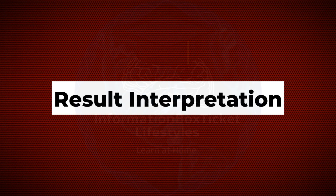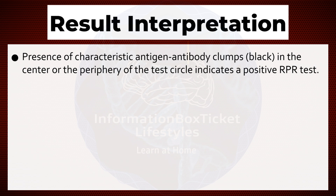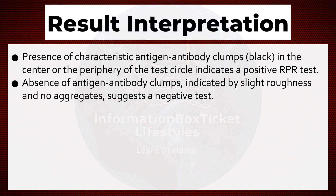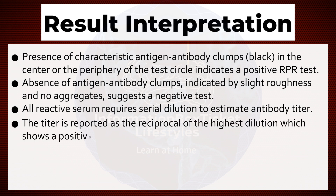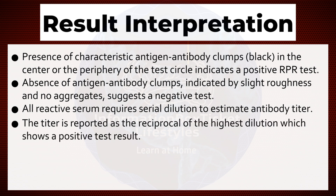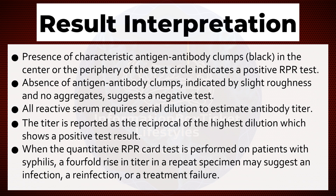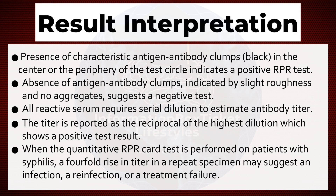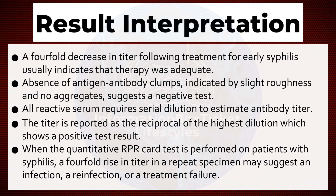Result Interpretation of Rapid Plasma Reagin Test. Presence of characteristic antigen-antibody clumps (black) in the center or periphery of the test circle indicates a positive RPR test. Absence of antigen-antibody clumps, indicated by slight roughness and no aggregates, suggests a negative test. All reactive serum requires serial dilution to estimate antibody titer, reported as the reciprocal of the highest dilution showing a positive result. A four-fold rise in titer in a repeat specimen may suggest an infection, reinfection, or treatment failure. A four-fold decrease in titer following treatment for early syphilis usually indicates that therapy was adequate.